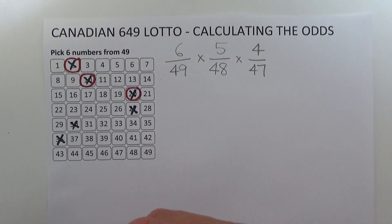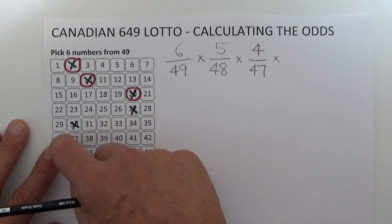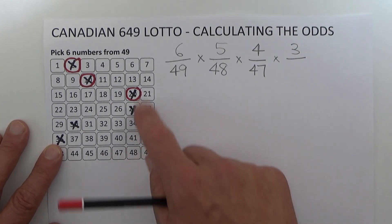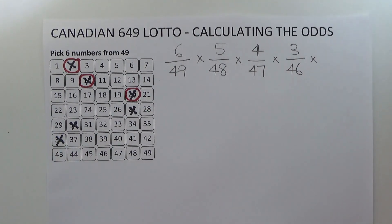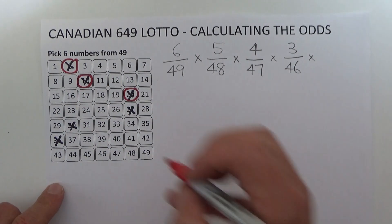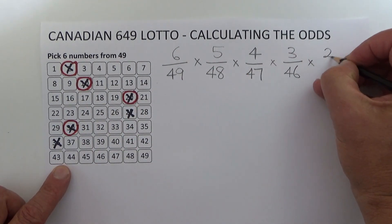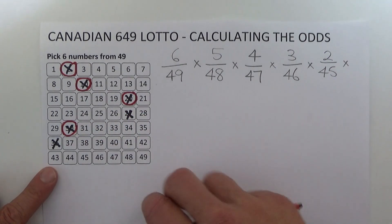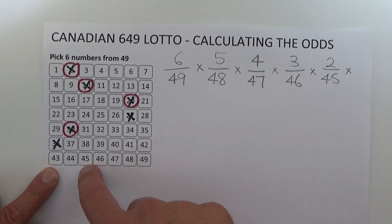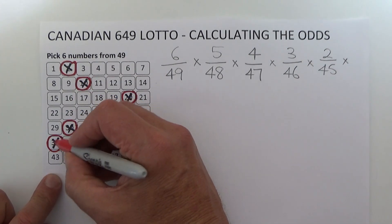When the fourth number is drawn, you have three chances in 46, because there are 46 balls left in the barrel. For the fifth number drawn, you're left with two chances in 45, because four balls have already been drawn from the barrel, leaving 45 balls remaining. I'll randomly mark off one of those last two numbers to show it's been matched.